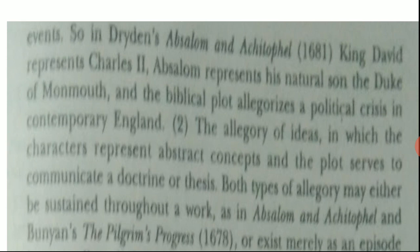The second type of allegory is the allegory of ideas, in which the characters represent abstract concepts or ideas and the plot serves to communicate a doctrine, thesis, or moral. Both types of allegory may either be sustained throughout the entire work — the whole poem or story — or may exist merely as an episode within the whole work.